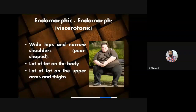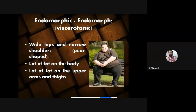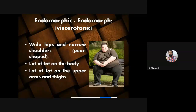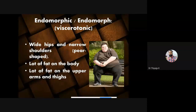Now moving to the first type — endomorphic, also called viscerotonic. The endomorphic somatic type is also known as viscerotonic. The characteristic states of this somatic type usually include being relaxed, tolerant, comfortable, and sociable. It means they are very happy to meet people — they are very extroverted. They are always happy to meet people and make fun for others. That kind of characteristic the endomorphic people have.